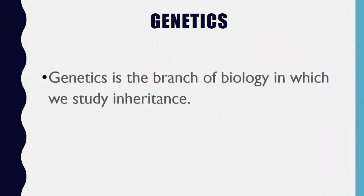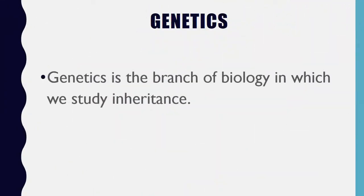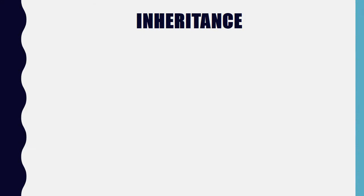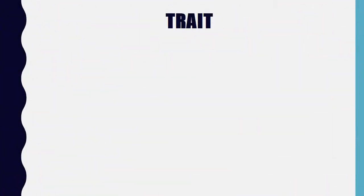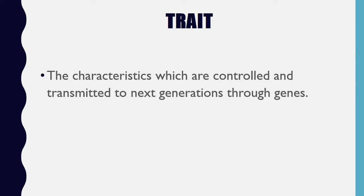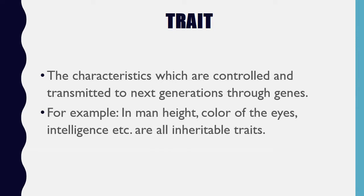Genetics is the branch of biology in which we study inheritance. Inheritance means the transmission of characteristics from parents to offspring. Trait: the characteristics which are controlled and transmitted to next generations through genes. For example, in man, height, color of the eyes, intelligence, etc. are all inheritable traits.